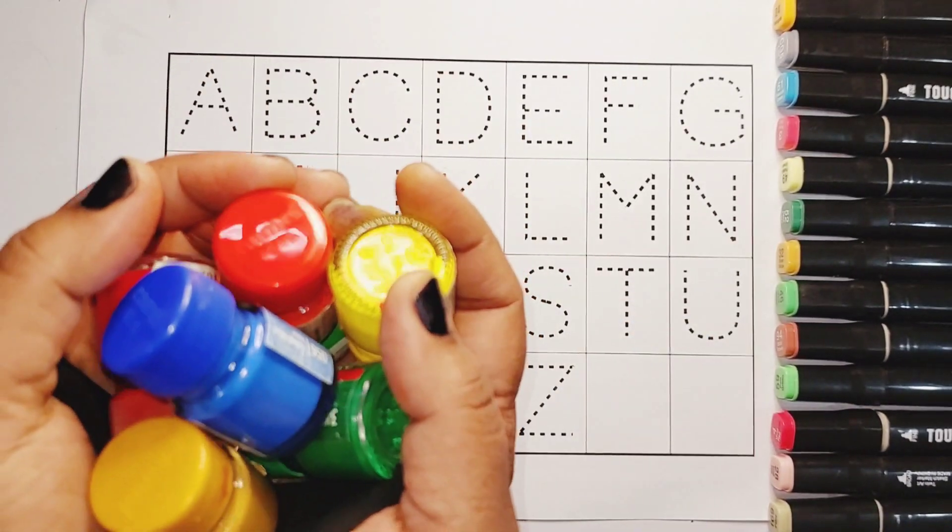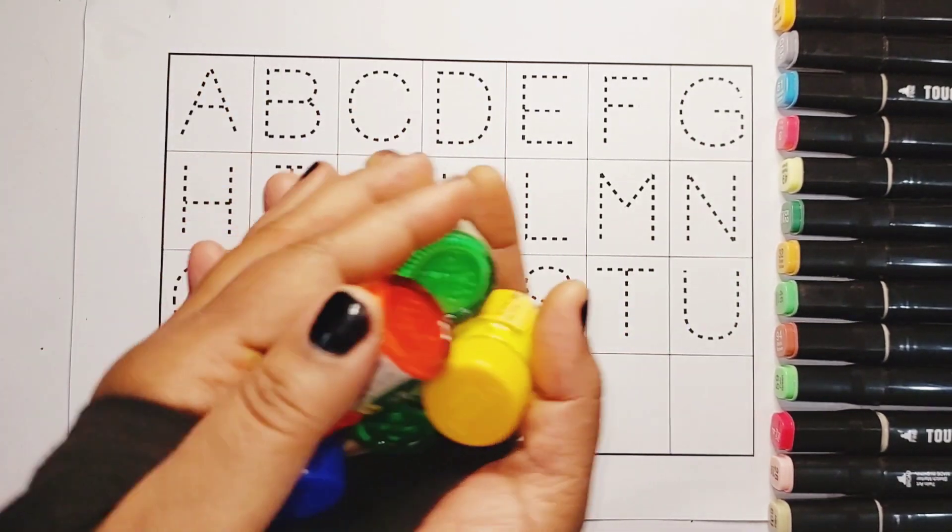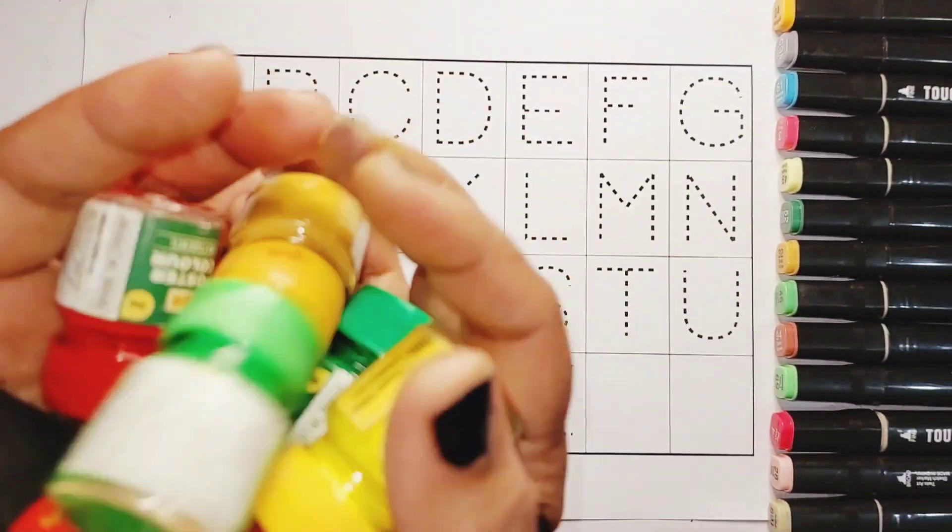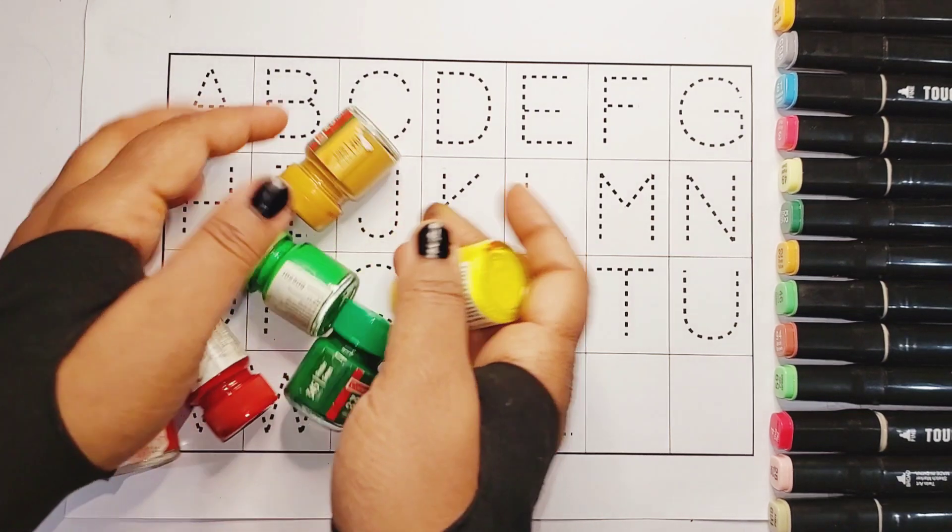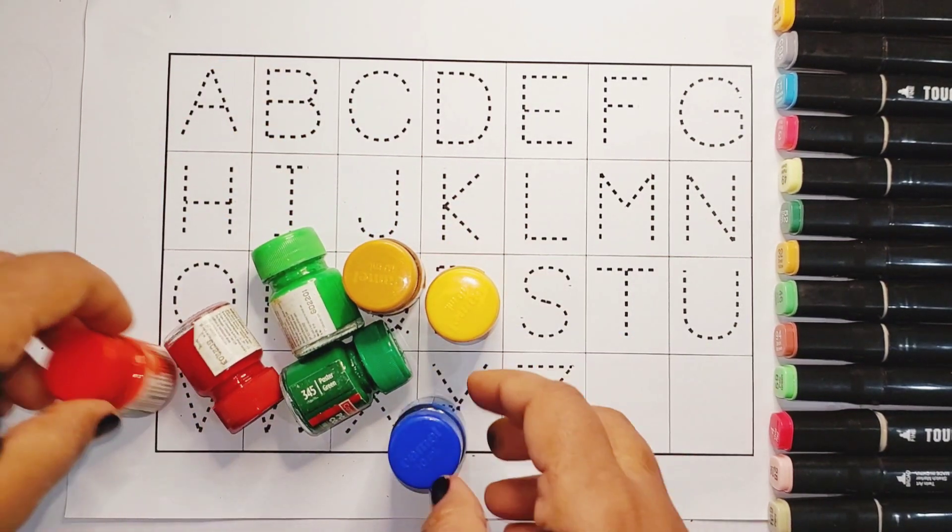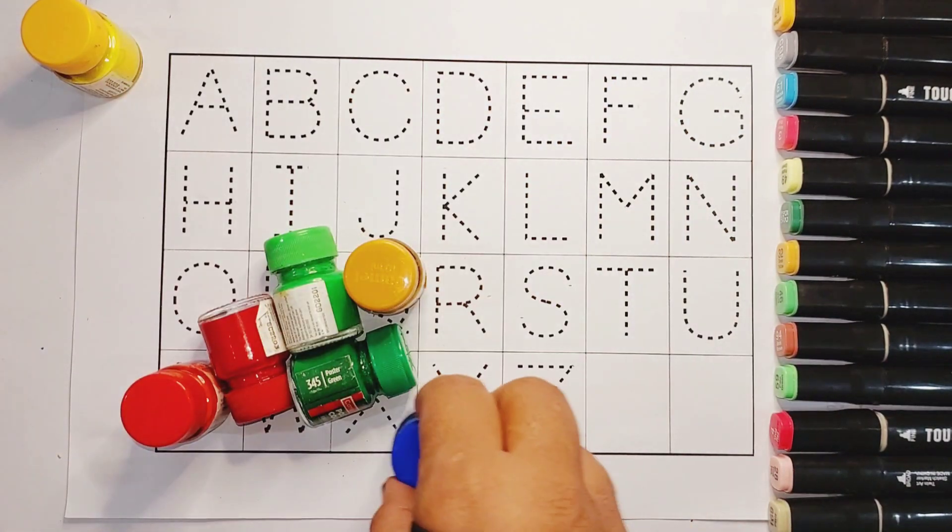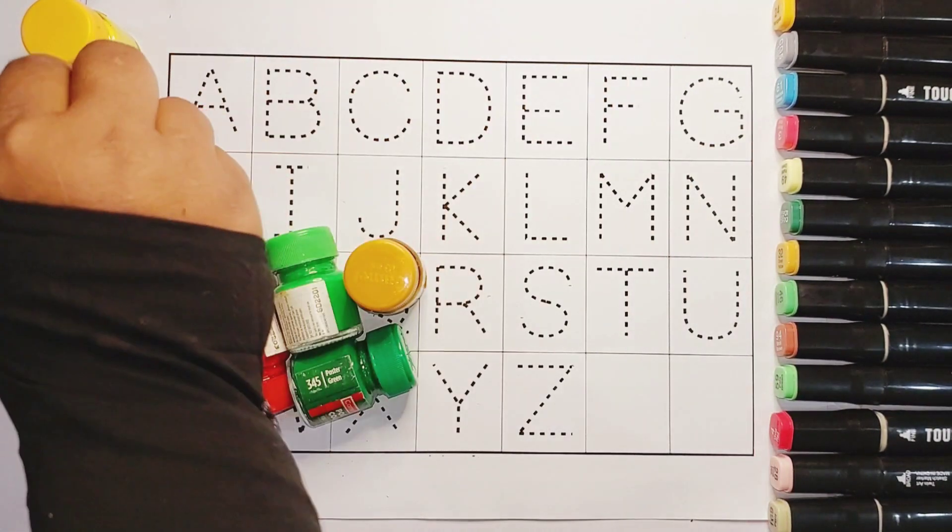Colors! Wow! Beautiful colors. Piyare piyare colors. Color names: yellow colors, blue colors.